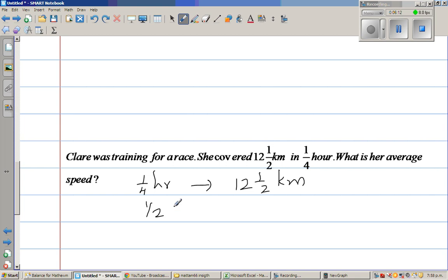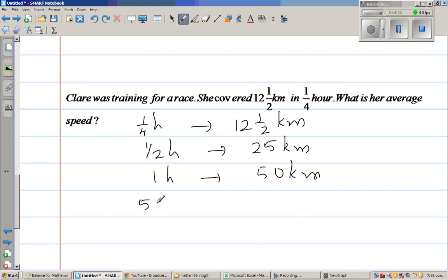So in half an hour, she covered how much? Double of this, because a half is double of a quarter. So this is 25 kilometers. So in one hour, I should write only H for hour, she travels or she races 50 kilometers. So her average speed is 50 kilometers per hour.